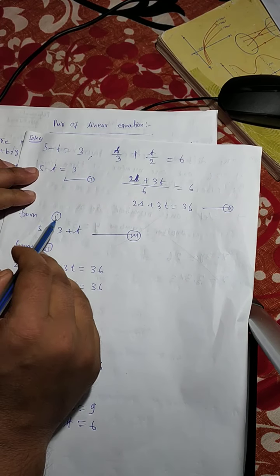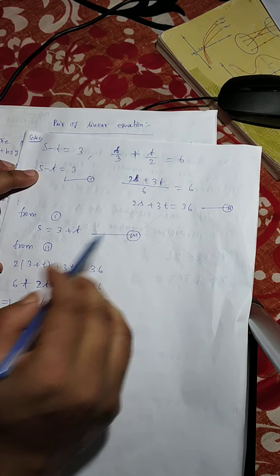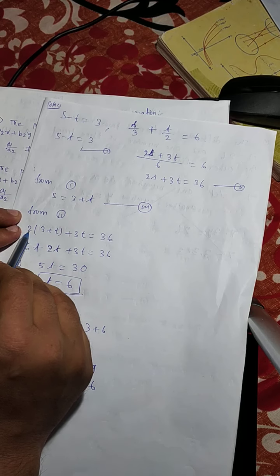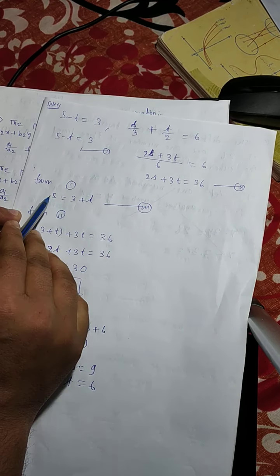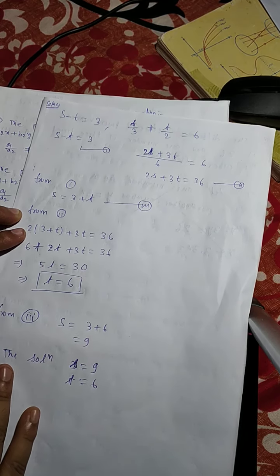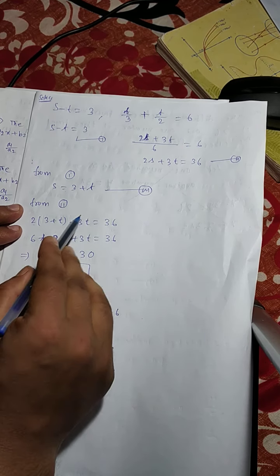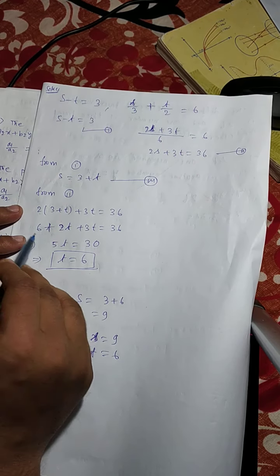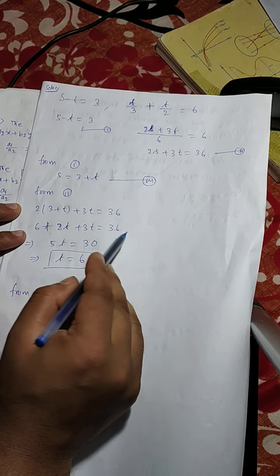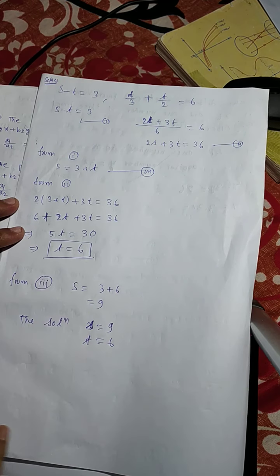Now from equation number 1, we can write s equals to 3 plus t — this is equation number 3. Substituting into equation 2: 2 into (3 plus t) plus 3t equals to 36. So 6 plus 2t plus 3t equals to 36. Therefore 5t equals to 36 minus 6, that means 30. So t equals to 30 by 5, that means t equals to 6.